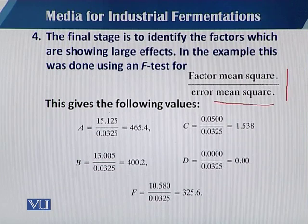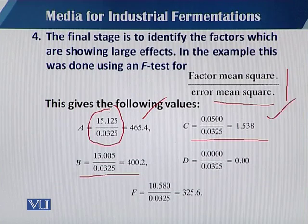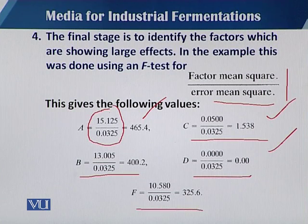In each case, when we divide the factor mean square by the error mean square, we get: for variable A, 465.4; for B, 400; for C, 1.538; for D, 0; and for F, 325.6.